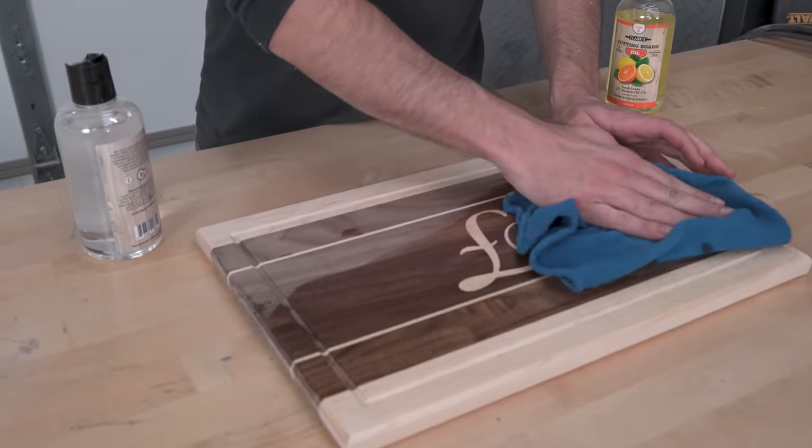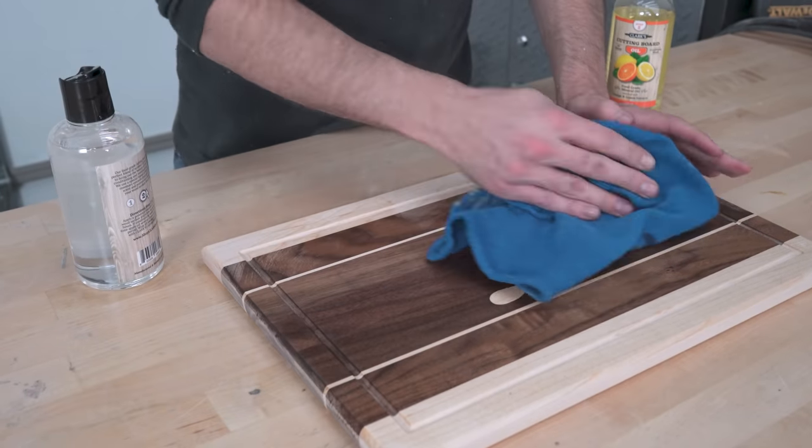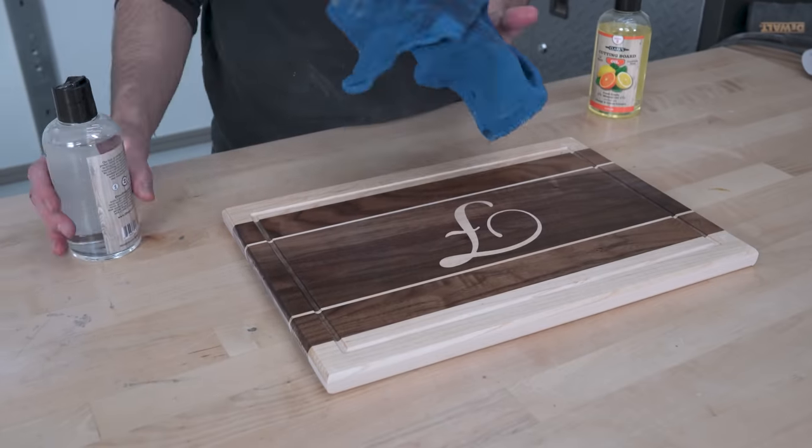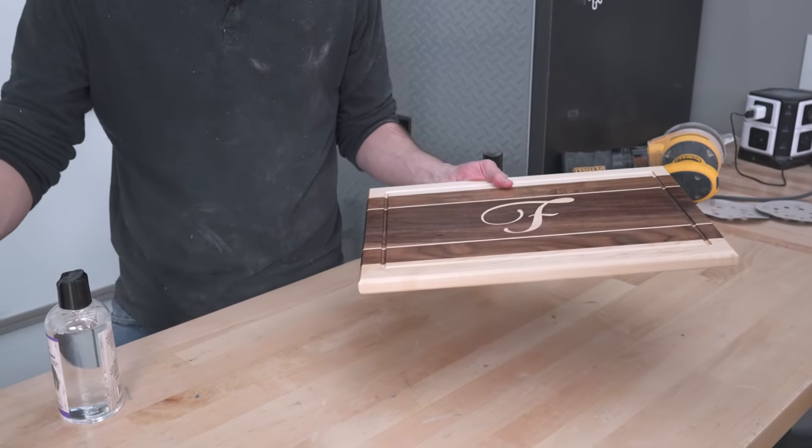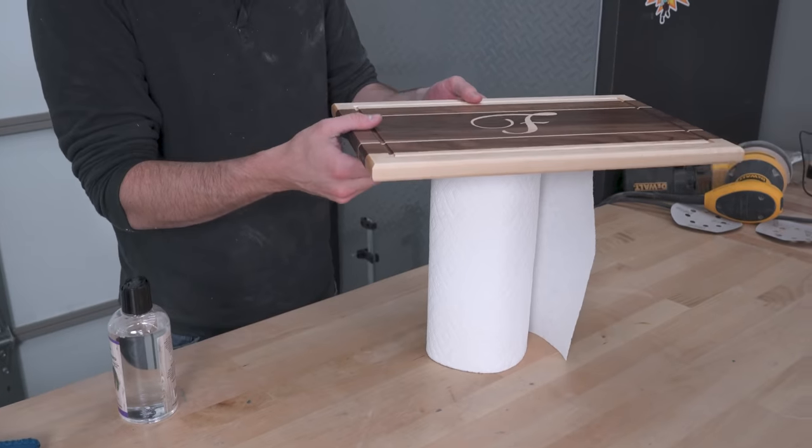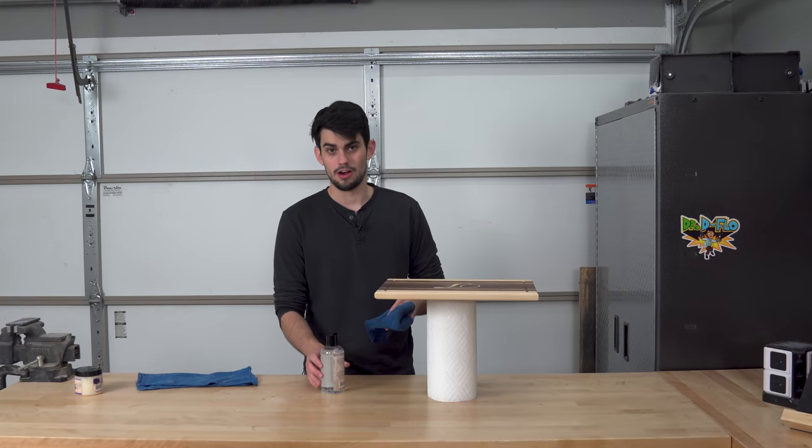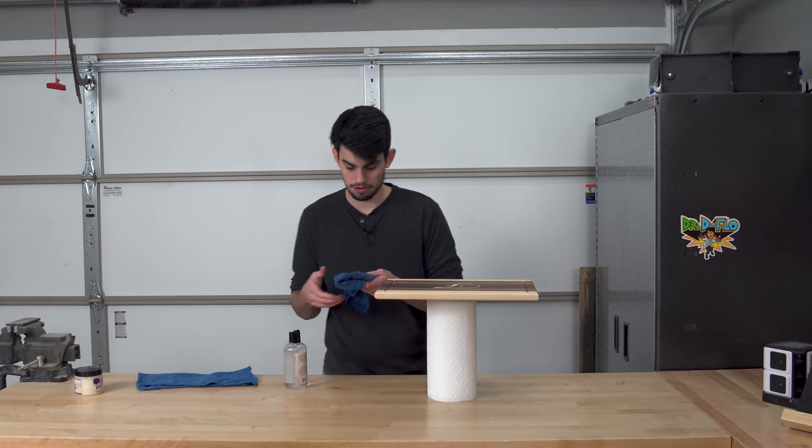The wood acts like straws when it comes to this oil. It takes quite a bit. Set this on top of the paper towel roll and then I'll come back and repeat this process in about 24 hours. Alright, so we're back with our final coat of the oil.